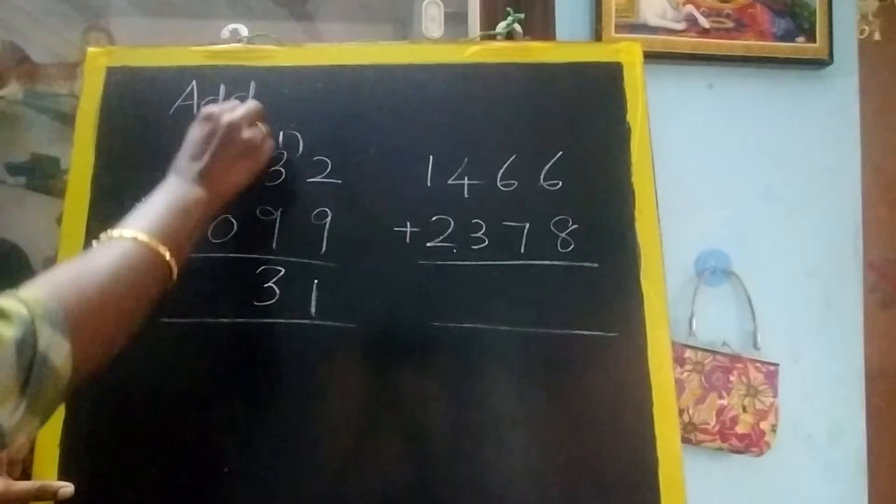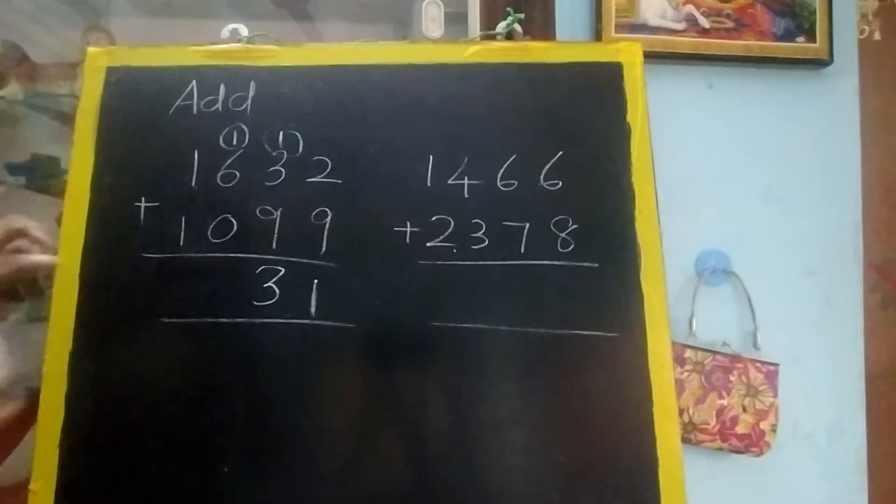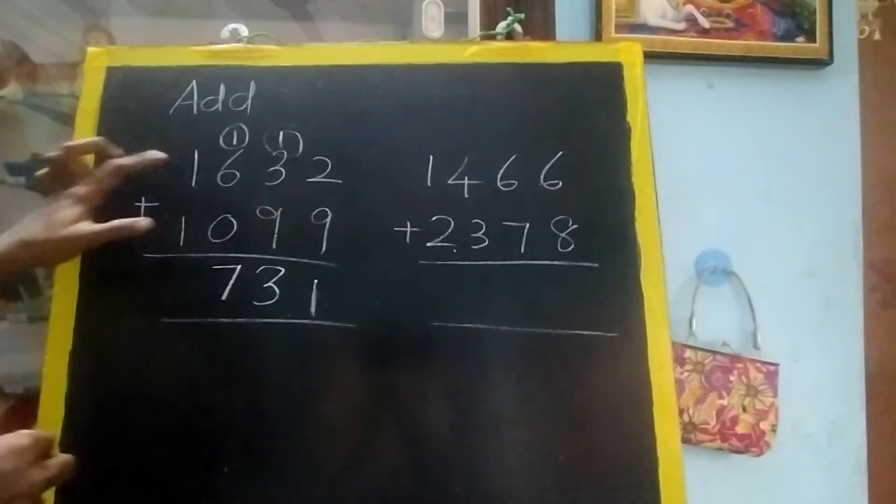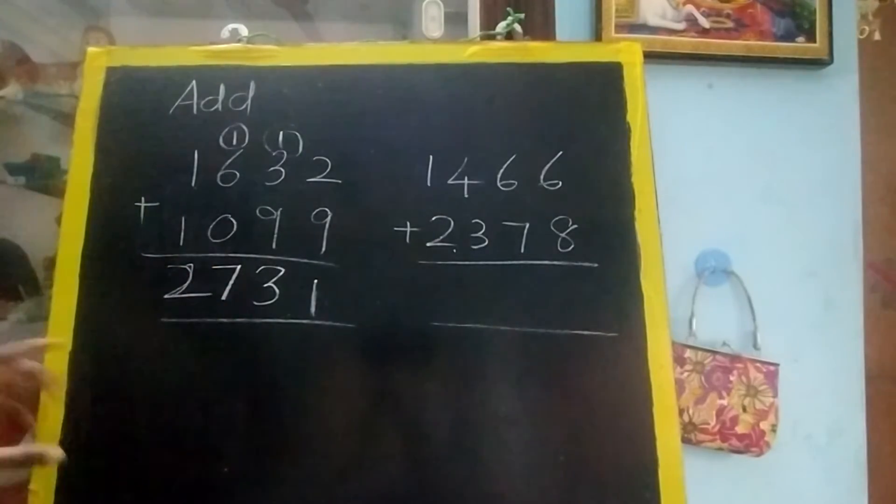One plus six equals seven, seven plus zero equals seven, one plus one equals two. So the answer is two thousand seven hundred and thirty-one.